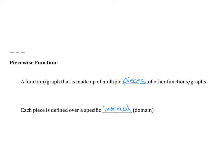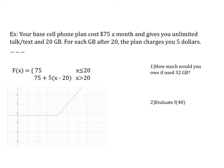Let's look at an example. We have a base cell phone plan that costs $75 a month and gives you unlimited talk, text, and 20 gigabytes. For each gigabyte over 20, the plan charges you $5. You can see that there are two different parts for this plan.